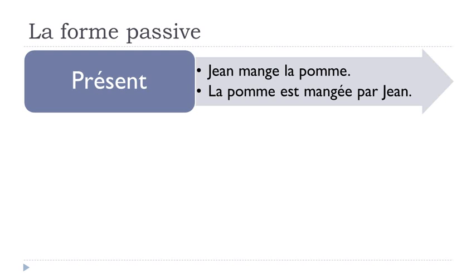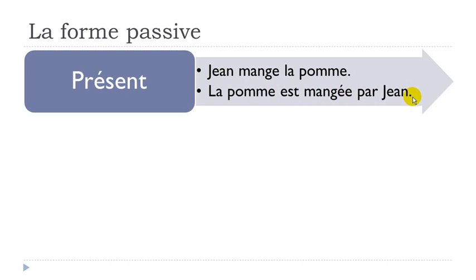Let's take another example. The important thing is that this passive form can be used at any tense — the only thing that changes is être. For le présent: Jean mange la pomme becomes la pomme est mangée par Jean. That's quite easy.